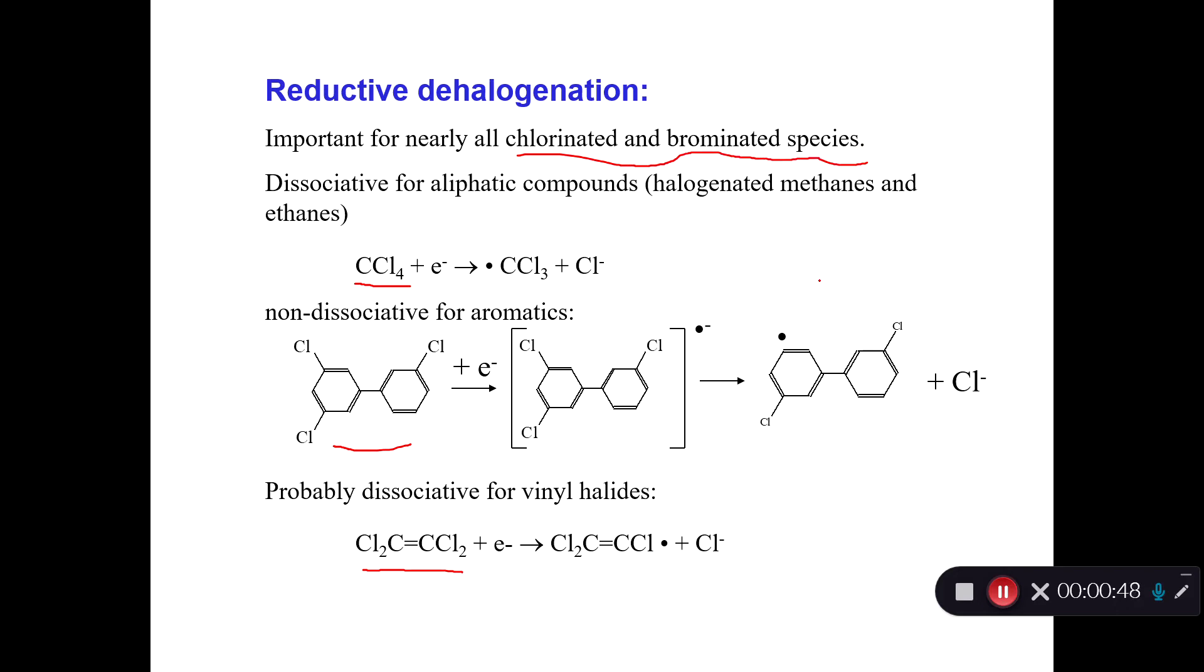We'll talk a little bit in the next sub-lecture about perfluorocompounds and how there's some evidence now that even perfluorocompounds can be defluorinated. Reductive dehalogenation is when you add an electron to this chlorinated compound. You spit off the halogen, in this case the chlorine, as a chloride, negatively charged.